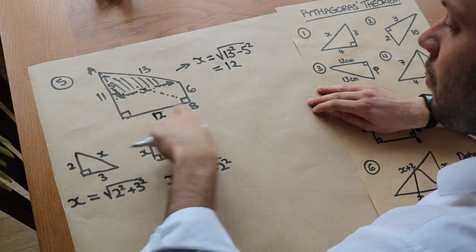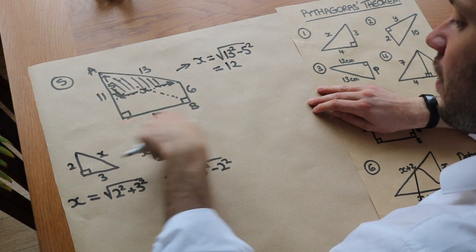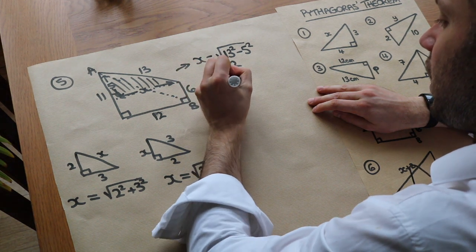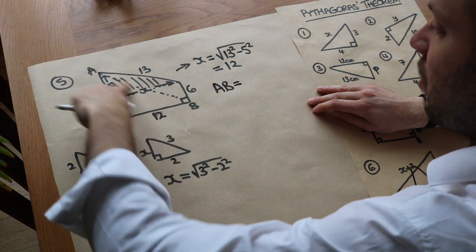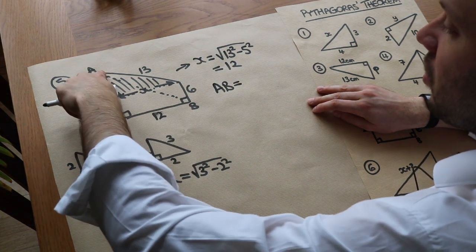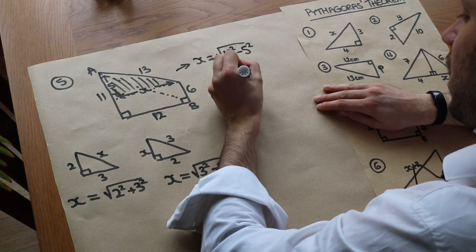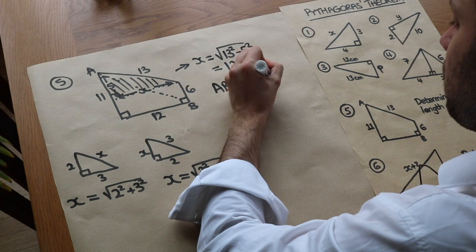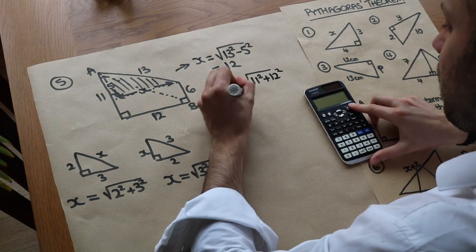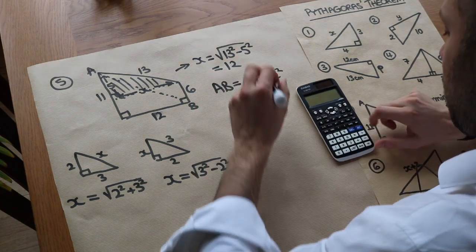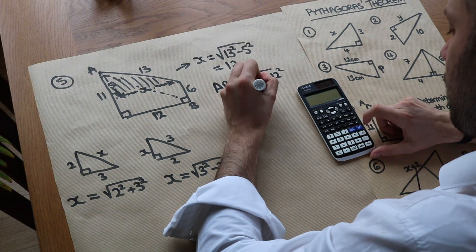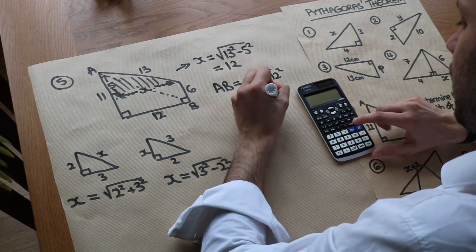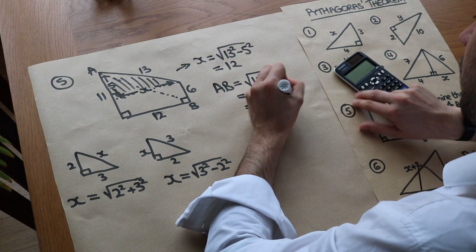Now we have the triangle for AB with the two shorter sides being 11 and 12. Since AB is the hypotenuse, we use the shortcut: AB = √(11² + 12²) = √(121 + 144) = √265. As a decimal to 3 significant figures, AB ≈ 16.3.